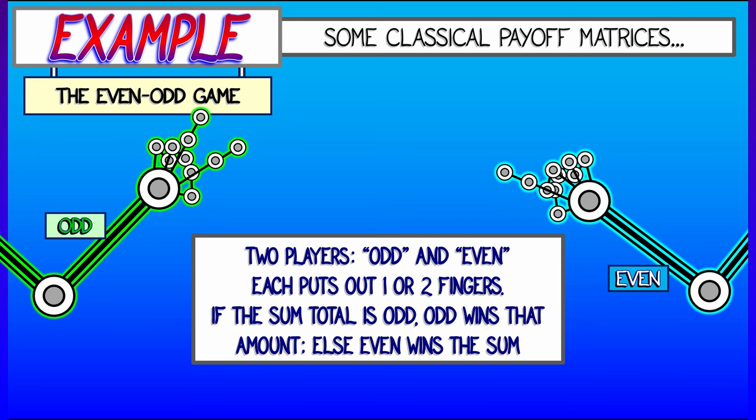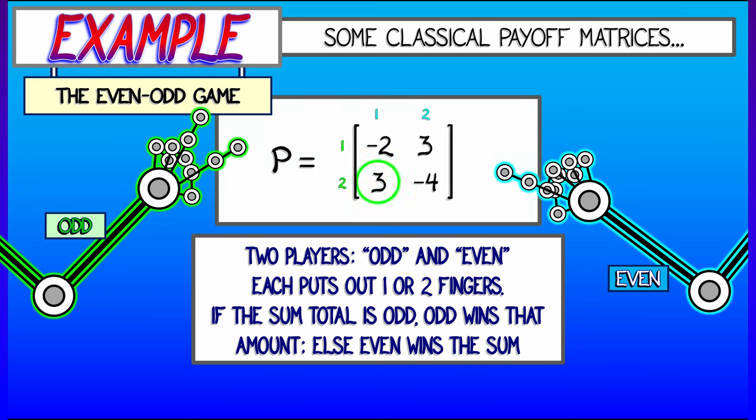Okay, so because there are two strategies for each player, the payout matrix is a two-by-two matrix. And you should check that it is this: negative two, three, three, negative four.